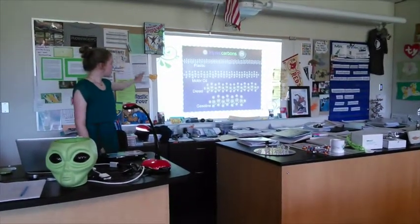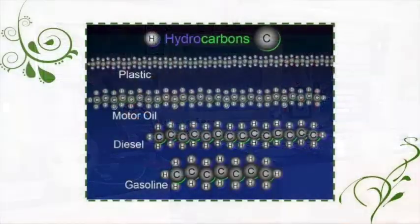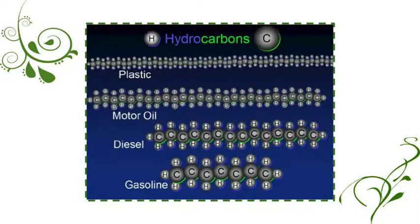This is a diagram of hydrocarbons. As you can see, plastic has a very long chain. A hydrocarbon means a chain of carbon atoms and hydrogen atoms. The more complex the chain is, the more difficult it is to break it down.